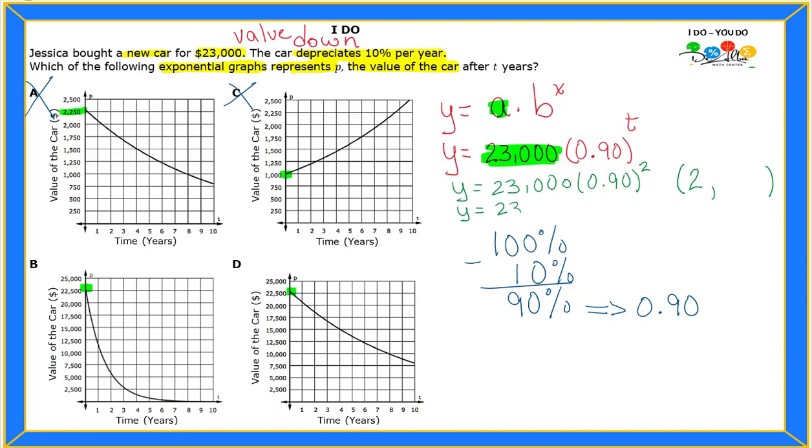So if we work it out, we're going to get 23,000 times 0.90 times 0.90. 9 times 9 is 81, so it gives me 0.81. If you multiply 23,000 times 0.81, we get y equals 18,630. That's the price of the car after two years.